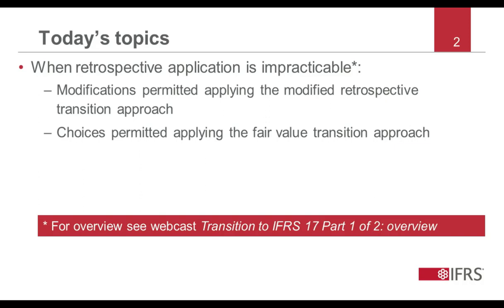As a reminder from part one of this webcast, if it is not impracticable to apply the fully retrospective approach, an entity must apply the fully retrospective approach when it first applies IFRS 17. When it is impracticable to apply the fully retrospective approach, transitional reliefs are provided for the IFRS 17 requirements that call for past information. There are two approaches: the modified retrospective approach or the fair value approach. In this webcast, we will discuss in further detail the transition relief provided under these two approaches.